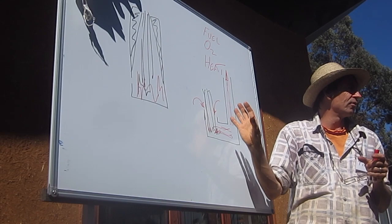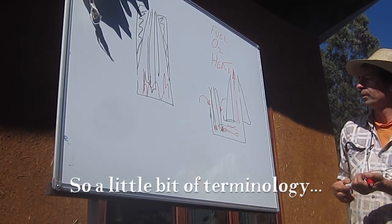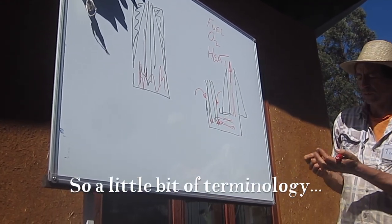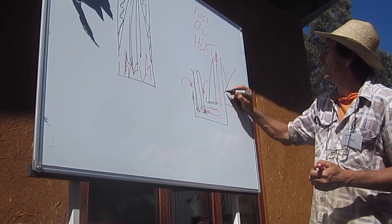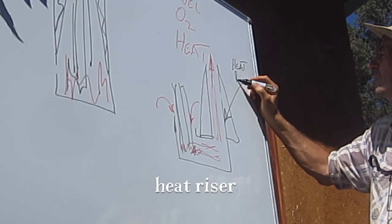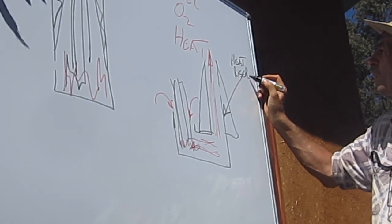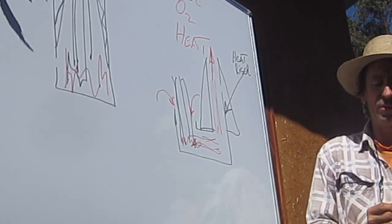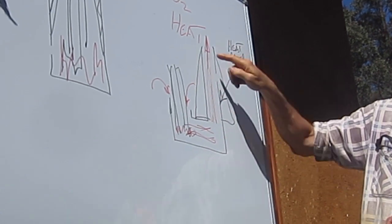A little bit of terminology: this section is called the heat riser. Some people call it a chimney or whatever, but it has a different function in your rocket stove.